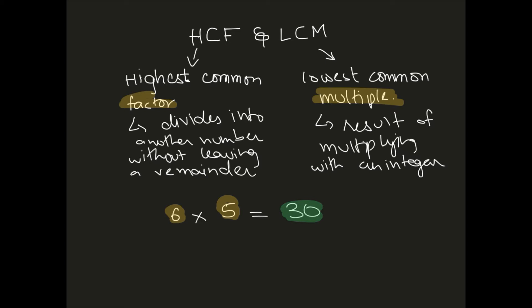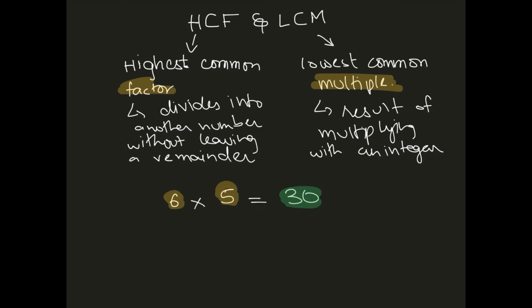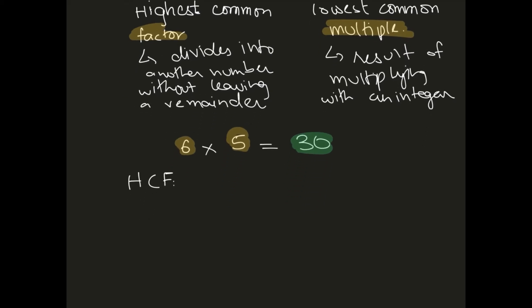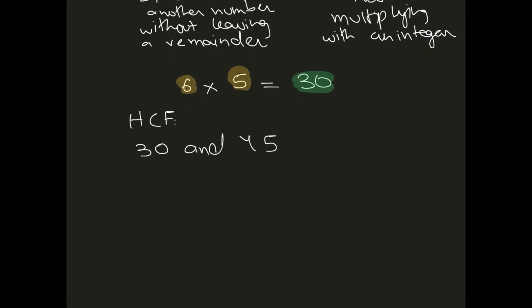Taking this idea forward, we are going to see what exactly the highest common factor and lowest common multiple are. Let's start with HCF. We have two numbers: 30 and 45. We can find the highest common factor using two methods — let's look at the listing method first.